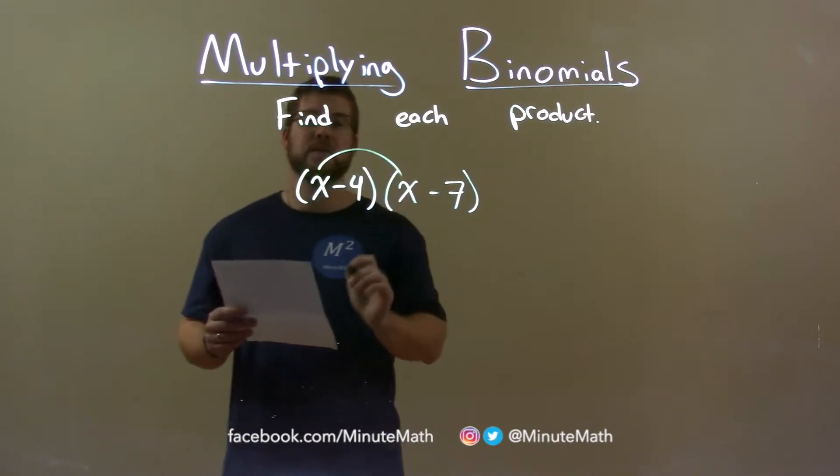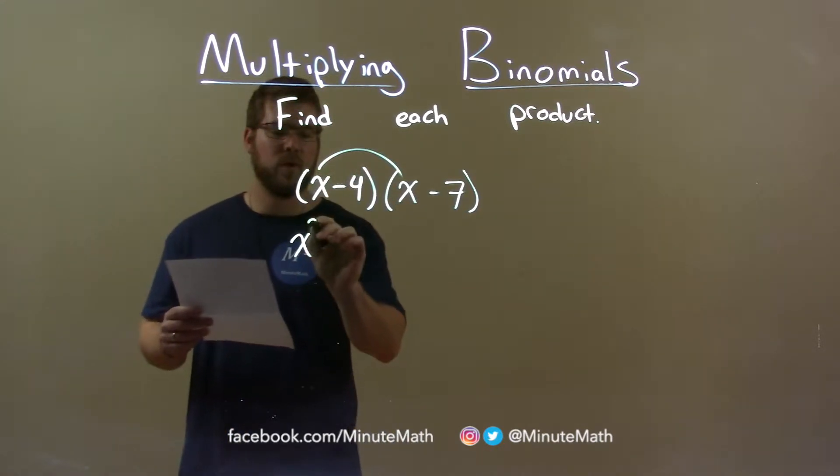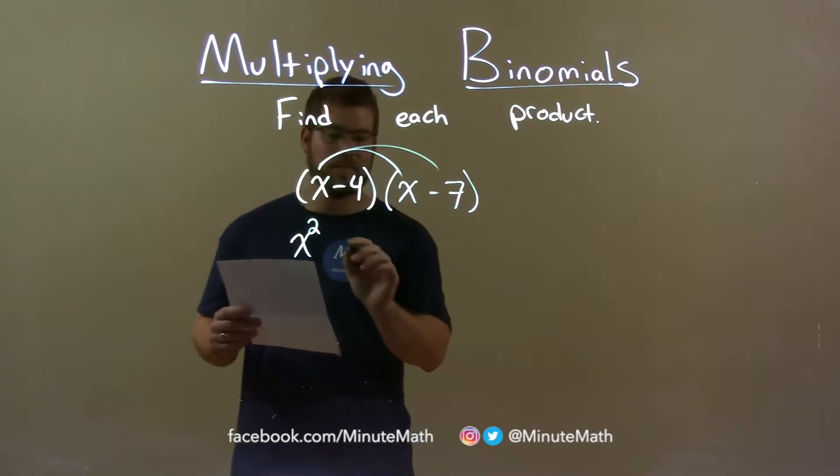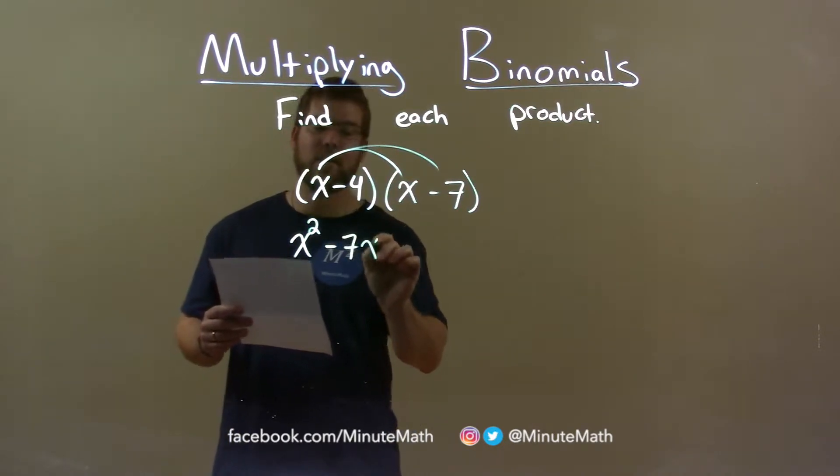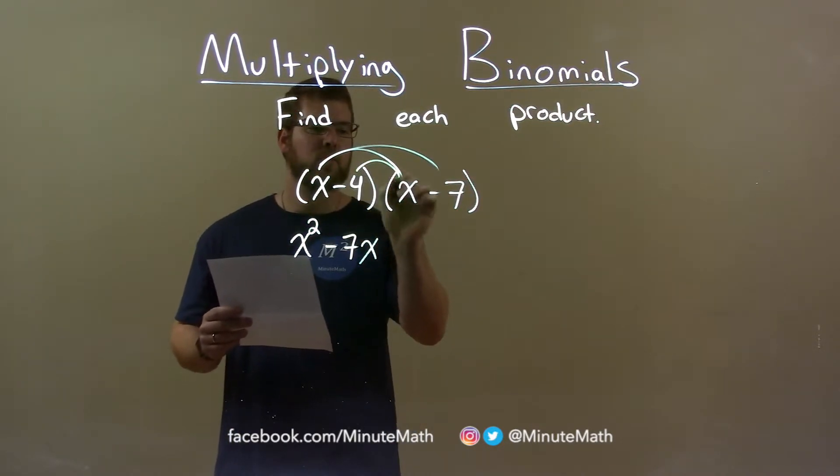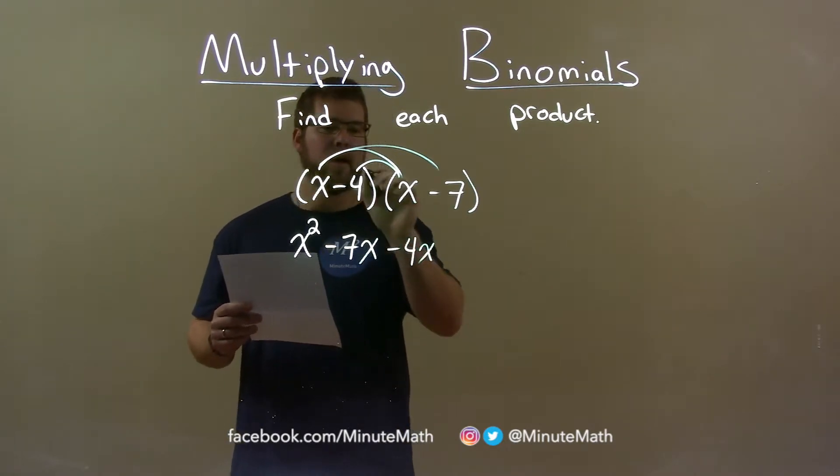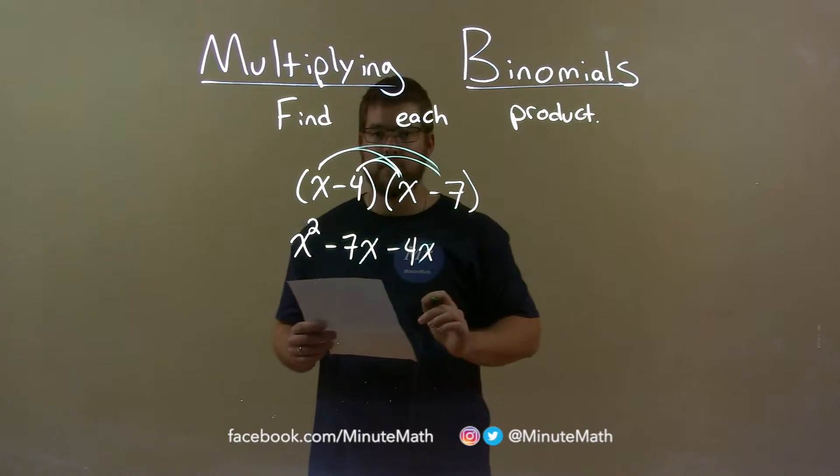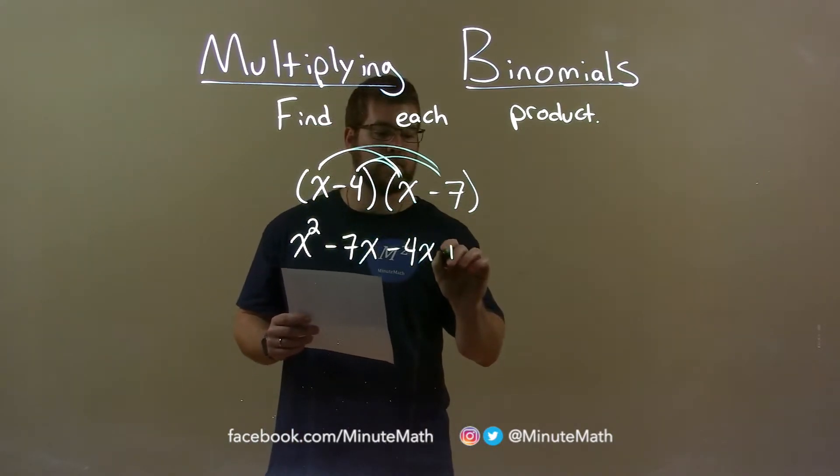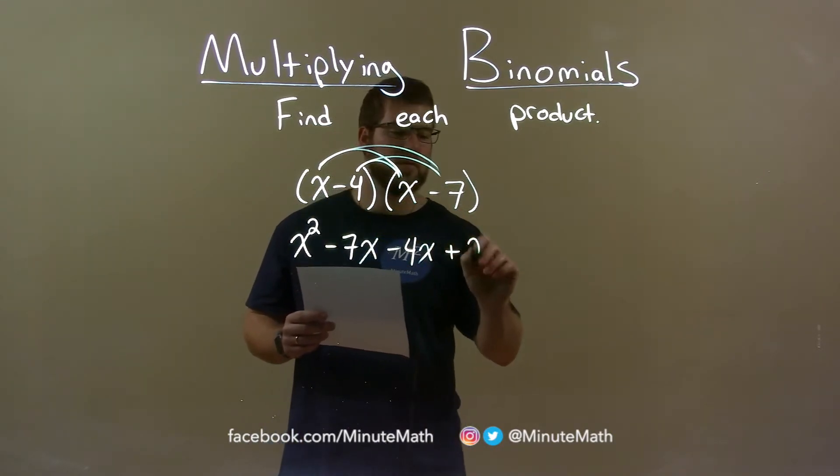So, x times x is x squared. x times minus 7 is minus 7x. Minus 4 times x is minus 4x. And minus 4 times minus 7, a negative times a negative is a positive, and 4 times 7 is 28.